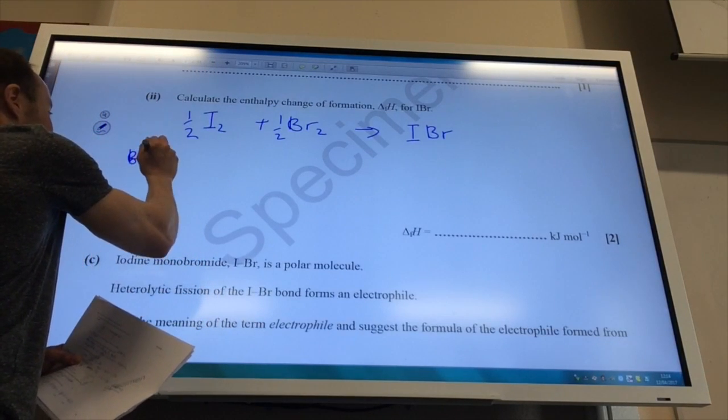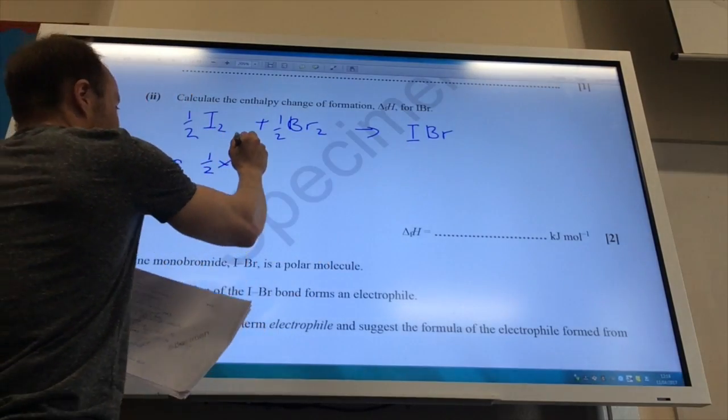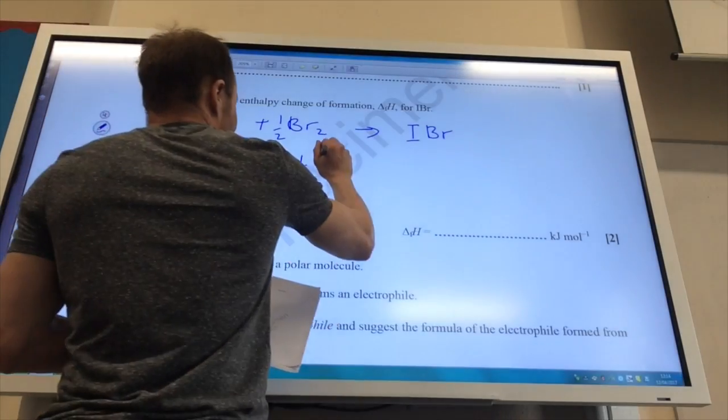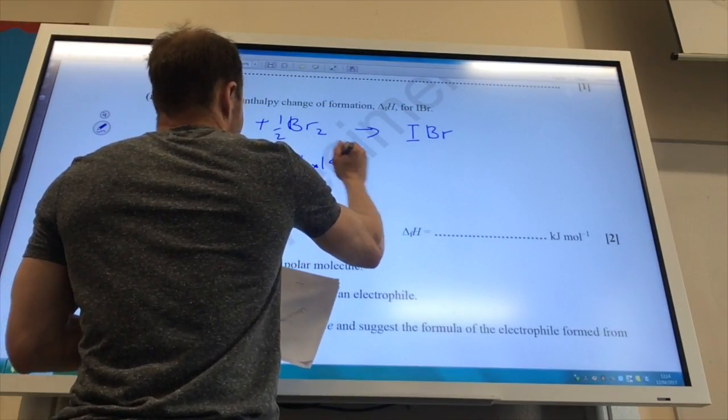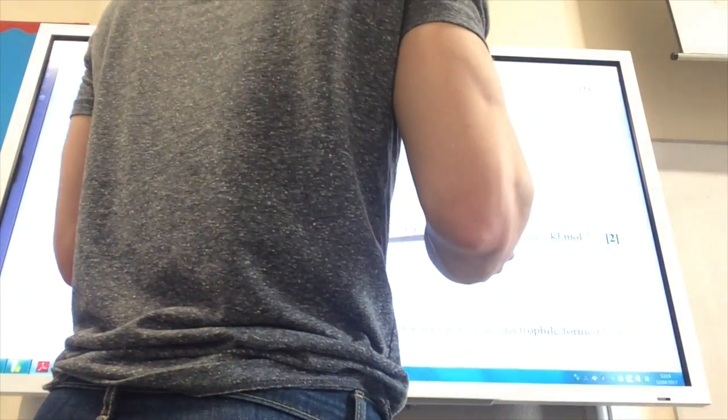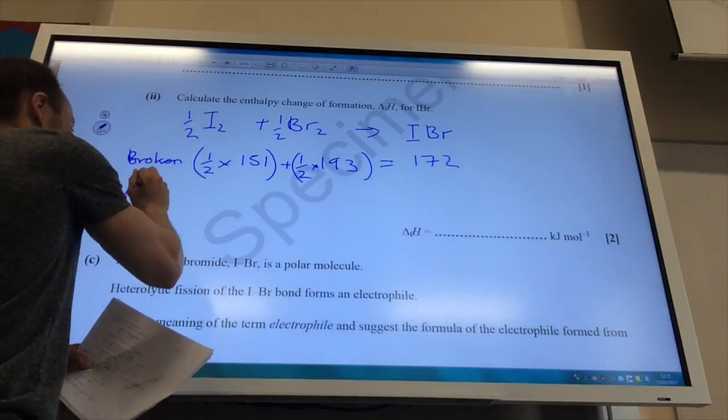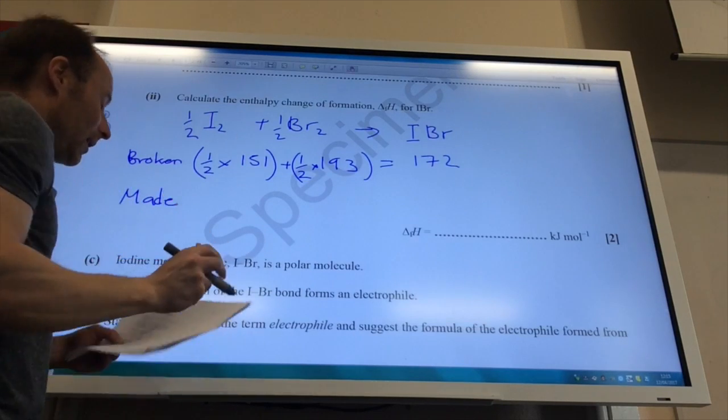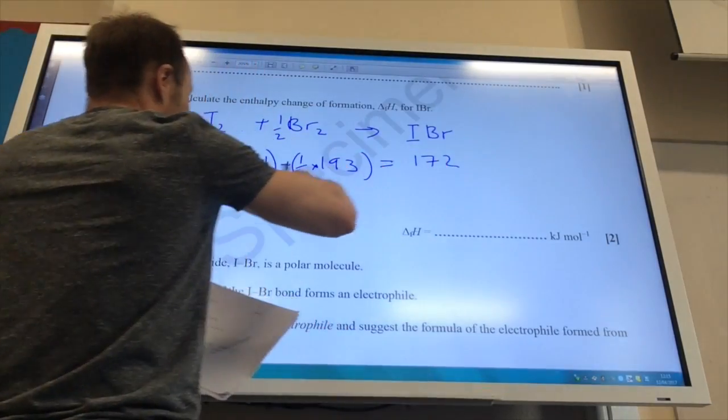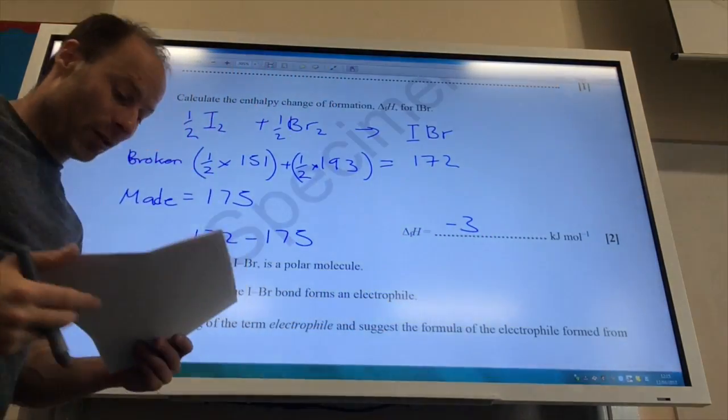So what have I broken? I have broken half an iodine bond, so half times 151 plus half a bromine bond, which is 193. And if I do that, that comes to 172. I've made an IBR bond, which is 175. And then it's that number minus that number, which gives me minus 3 kilojoules per mole.